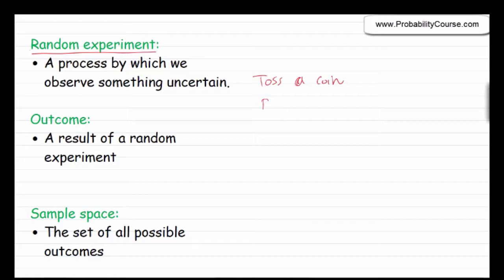Or you may roll a die and observe a number between 1 and 6. Or you observe a stock price of a company at some point in the future, and again, because there is uncertainty involved, this is a random experiment.